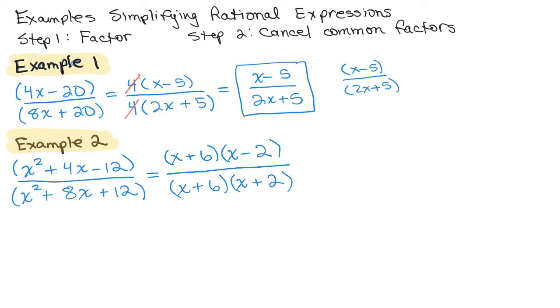So what cancels this time? Well, X plus 6 is a common factor. So I can cancel this. So my answer is X minus 2 over X plus 2.